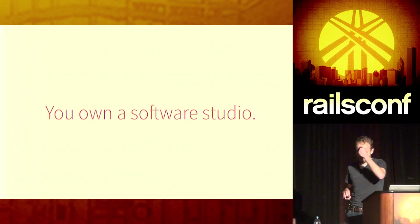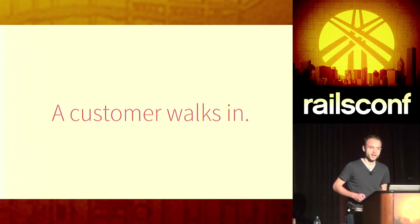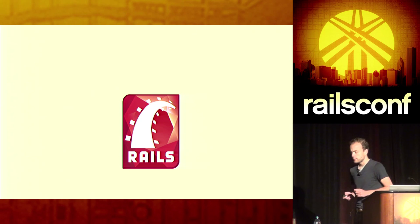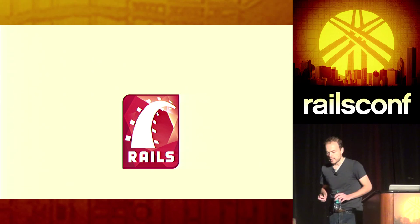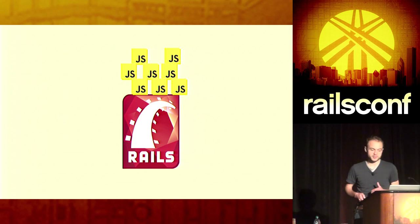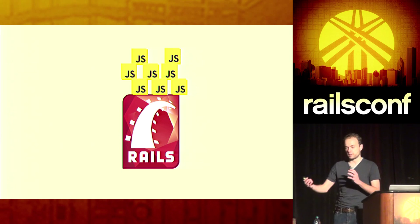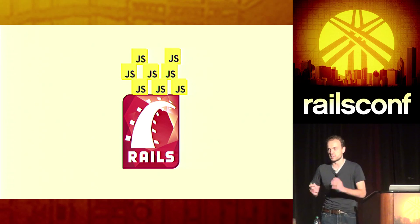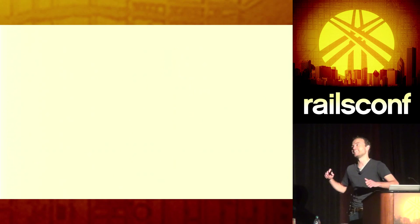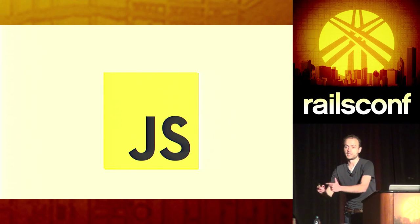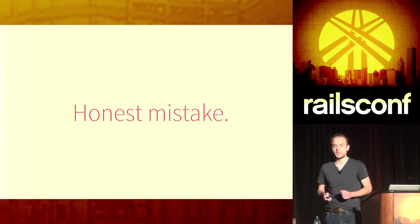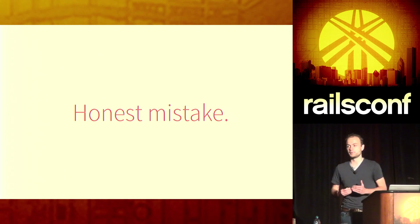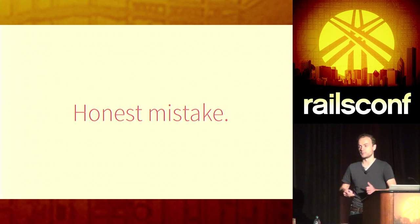Say you own a software studio and a customer walks in saying they need a web application. So you say, 'What's its name so I can type Rails new.' You build them a little graph, render it on the server, and they say this graph is great but they need some zooms and some filters. So you sprinkle some JavaScript on top. Then they say they want to load all the data at once so the user can see everything dynamically, like an app. And then you, the developer, think: there's no logical path from that solution to what they really wanted, which was a fat client JavaScript application. Rails is probably still involved providing API services, but it's not the center of the application. That monolithic approach doesn't work. It's an honest mistake if it happens once. But if part of your workflow is to immediately assume Rails is the solution to every single web application, and then you only realize later that you've built a gigantic mess with JavaScript, that's a problem.